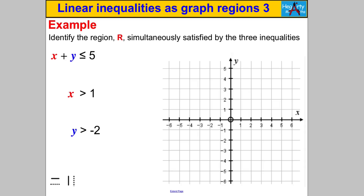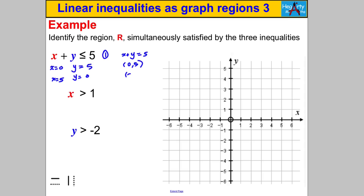We've got three inequalities, so we need to draw three lines. Let's do them one by one. For the line x + y = 5, if x = 0 then y = 5, and if y = 0 then x = 5. So the line passes through (0, 5) and (5, 0), which helps me draw it quickly. I'll label both those points.